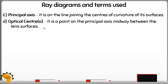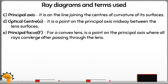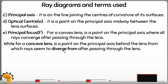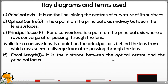The optical center, with symbol O, is the center of the lens — midway between the lens surfaces along the principal axis. The principal focus is the point where parallel rays incident to a convex lens are converged, or for a concave lens, the point where the rays appear to come from after refraction. The focal length, represented by small f, is the distance between the optical center and the principal focus.